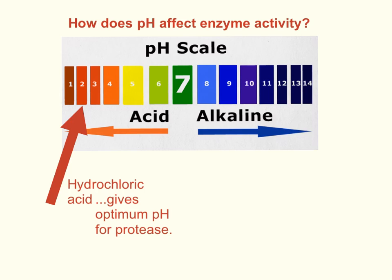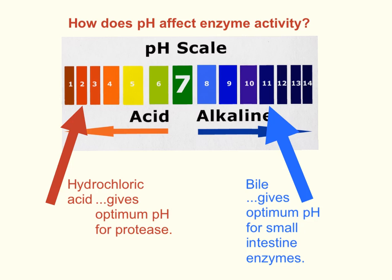If you take a stomach enzyme to pH 7, pH 8 or above, that will cause the active site to be destroyed. In the small intestine, bile has a very high alkaline pH, and the enzymes there — carbohydrases, lipase, and protease — work best at an alkaline pH. Each enzyme works best at a particular pH, its optimum, and if you go too far from that, the active site will be destroyed. There's a useful word for this: the enzyme is denatured. Denaturing only occurs at high temperatures or extreme pHs.